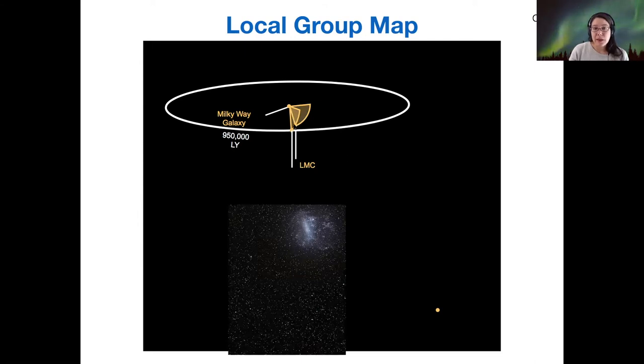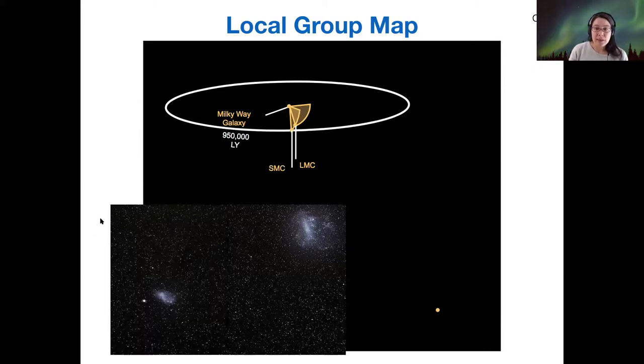Since these are both located some distance away from us and also under this imaginary plane that we're drawing around the Milky Way, we see them in the same area of the sky. These are both visible from the southern hemisphere only.